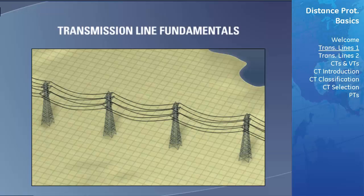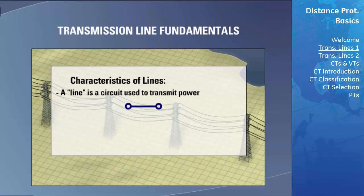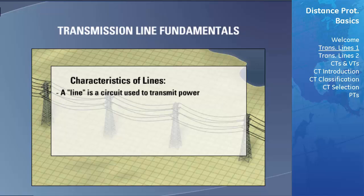We will start this section with a brief overview of transmission lines and their general operation and characteristics in a power system. A transmission line is a circuit used to transmit power from one location to another and can span short distances in the magnitude of a few hundred meters or very large distances in the magnitudes of hundreds of kilometers. Transmission lines protected using distance relays are usually at least one kilometer in length and can extend as far as 750 kilometers or more.